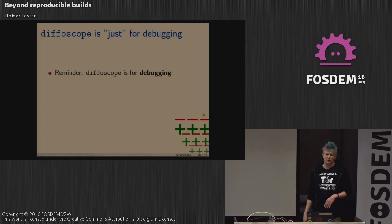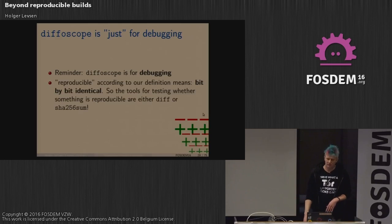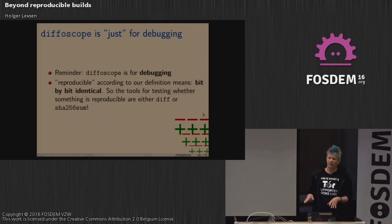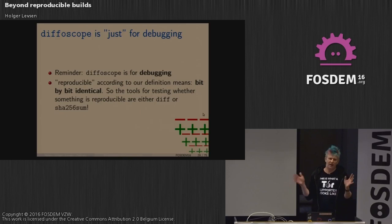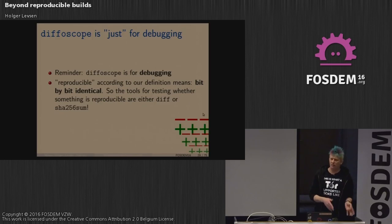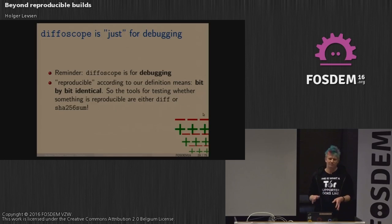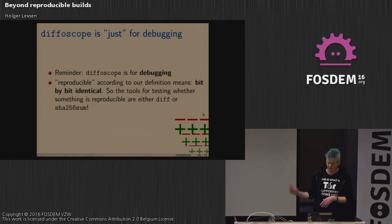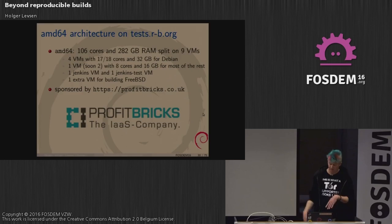Diffoscope is only used for debugging. For testing whether something is reproducible, we just compare checksums — we don't want to analyze contents, because that is potentially error-prone and can be a risk. So for checking whether something is reproducible, Diffoscope is not used. Comparing two builds is definitely fine, but you probably don't want to run Diffoscope on totally untrusted input.